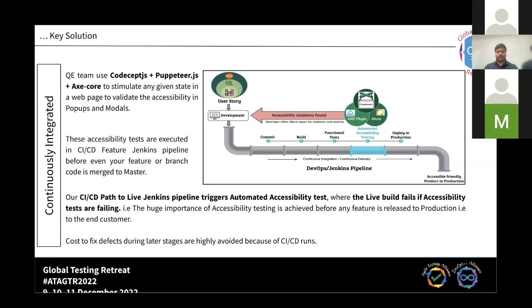Based on the reports, the team fixes issues accordingly, then commits and pushes the code back into the pipeline. The pipeline triggers again, goes through its stages, and re-runs accessibility testing for all fixed scenarios. Once everything looks good, we go to production. The main agenda is to identify issues at an early stage before going to production — notice all violations and fix them accordingly. The pipeline also triggers for each feature branch as well as the master branch.